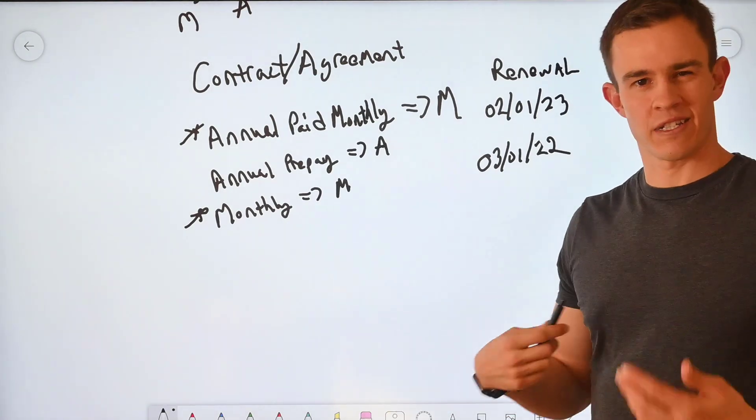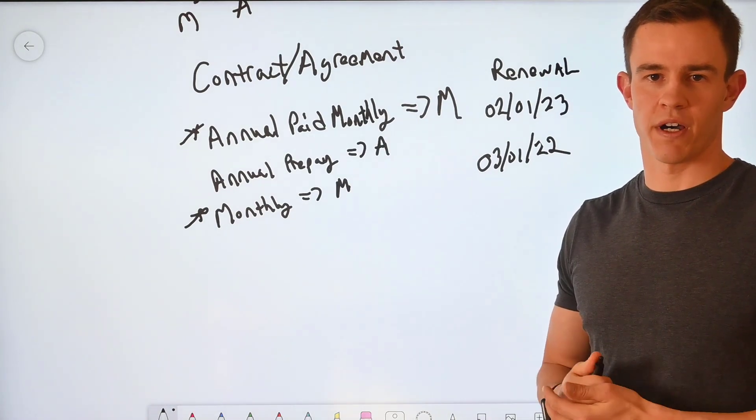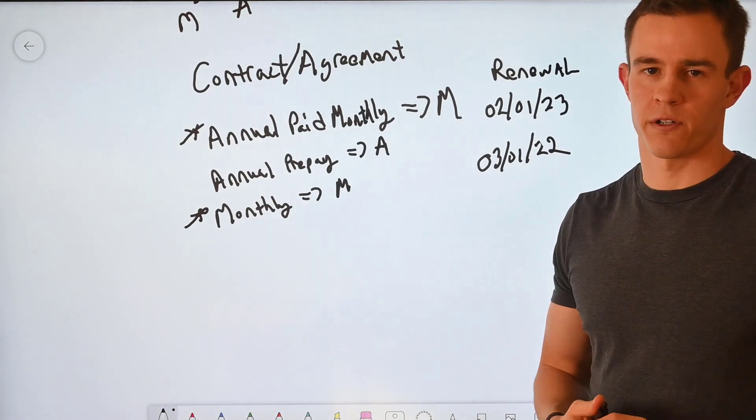And with monthlies, I can just tell my customers, hey, you need to tell us what your seat count is before the first of the month. And we can adjust that for your next month's billing.